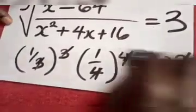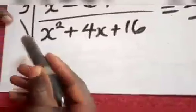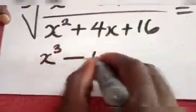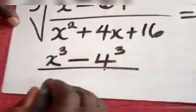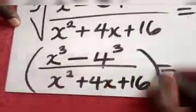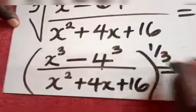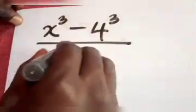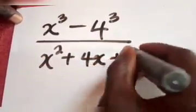Now, we know that we are going to take the cube of both sides, because this can also be written as x raised to the power of 3 minus 4 raised to the power of 3, all over x squared plus 4x plus 16. This is the same thing as putting the 3 here as 1 over 3, and the right side equals 3.